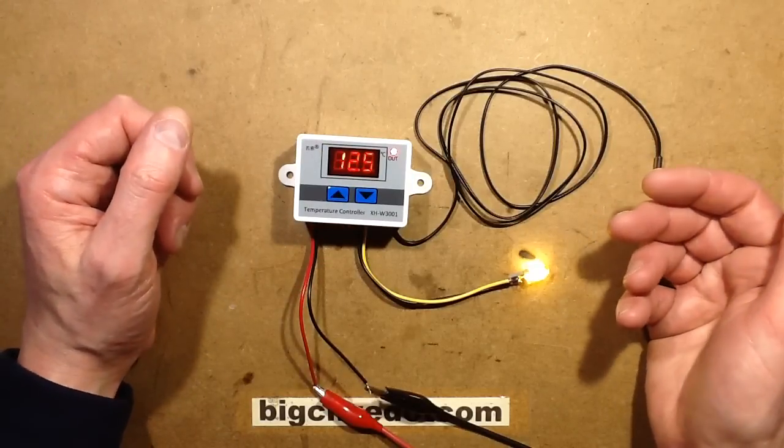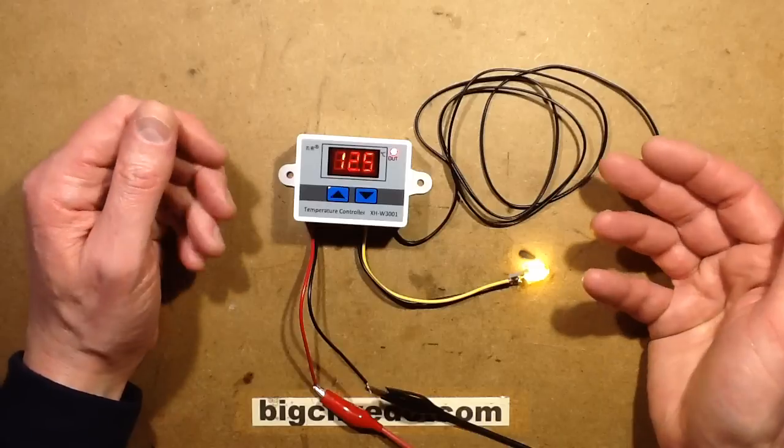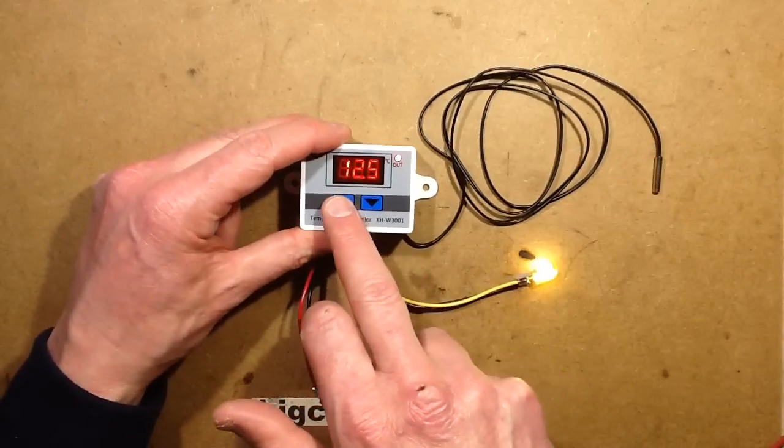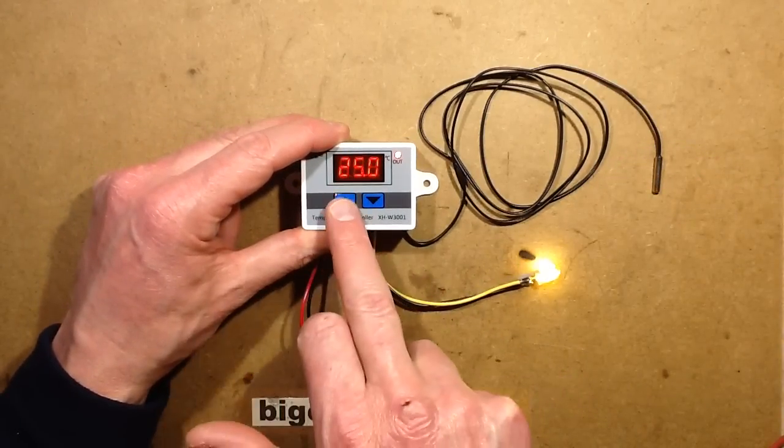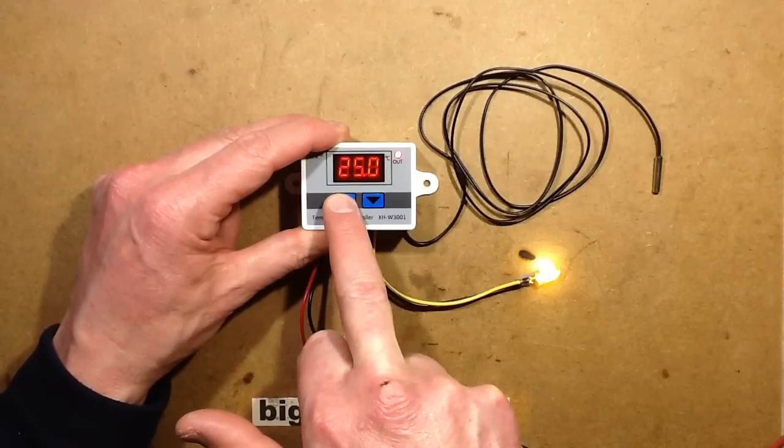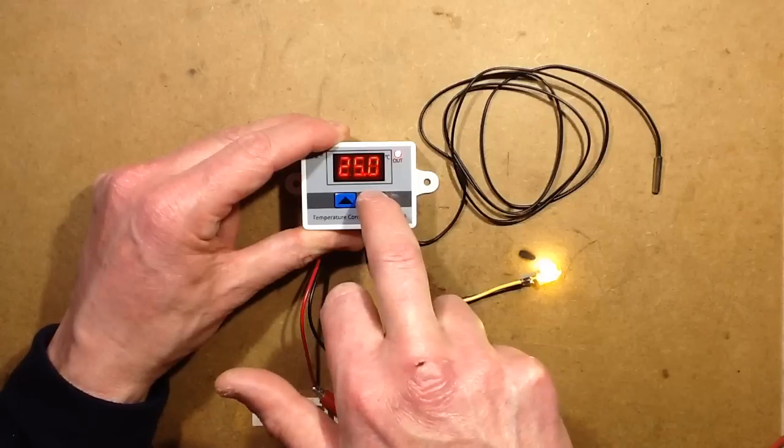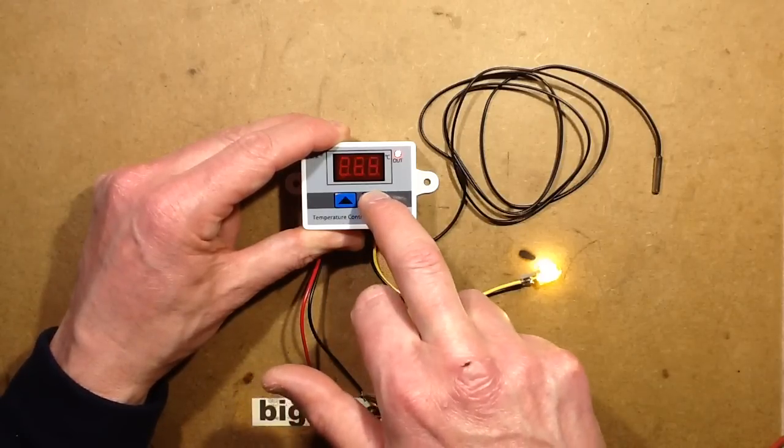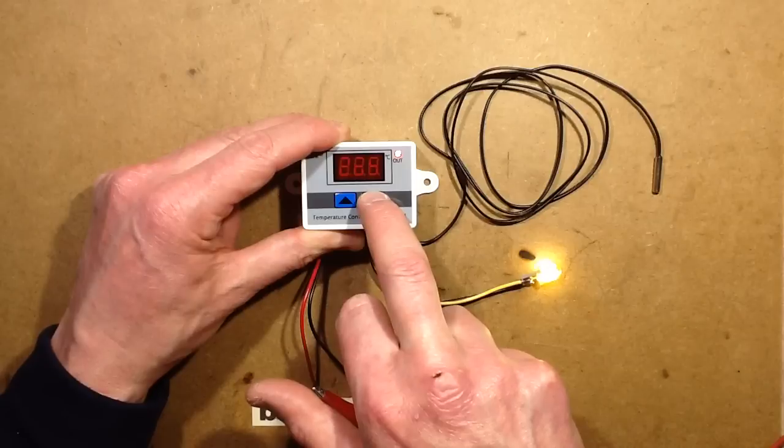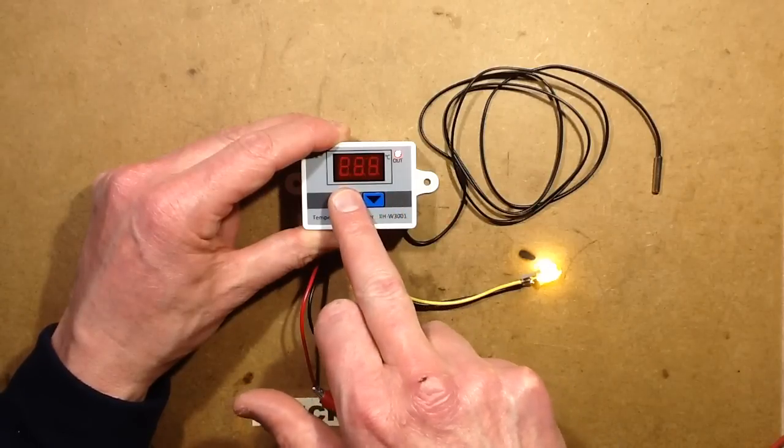Let's set an example here. I wanted to use this to cool, so the temperature I'd want it on, you press and hold until it starts flashing and then you can use the up down arrows. So I'm going to reduce that to 22. If you hold it, it fast-forwards.